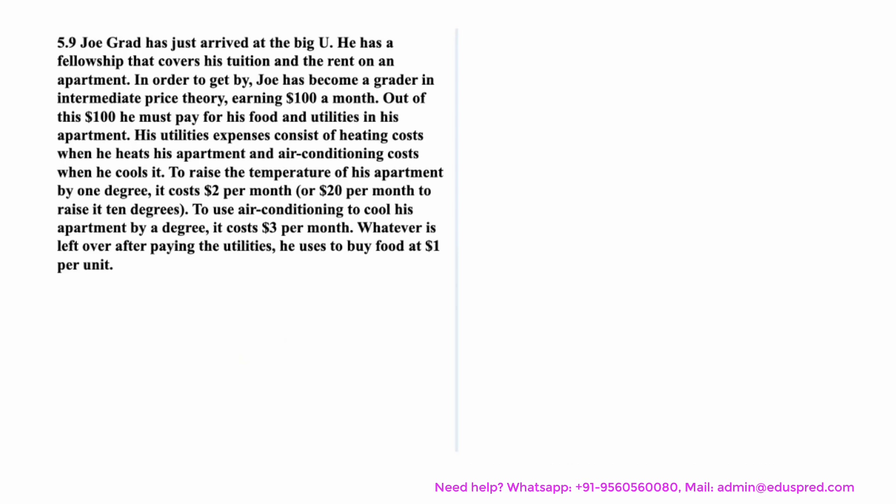Out of this $100, he must pay for his food and the utilities in his apartment. His utility expenses consist of heating cost when he heats his apartment and air conditioning cost when he cools it. To raise the temperature of his apartment by 1 degree, it costs him $2 per month, or $20 per month to raise it by 10 degrees. To use air conditioning to cool his apartment by a degree, it costs him $3 per month. Whatever is left over after paying the utilities, he uses to buy food at $1 per unit.